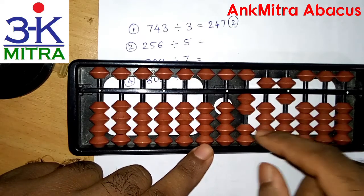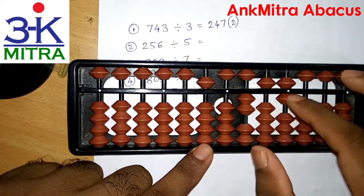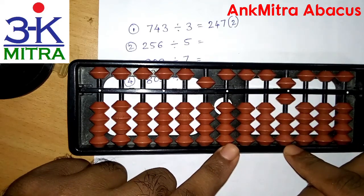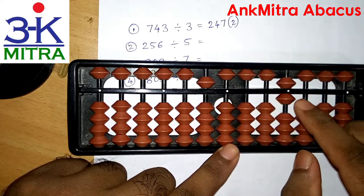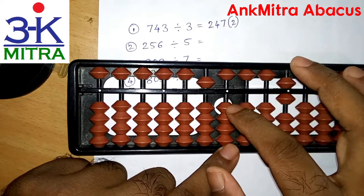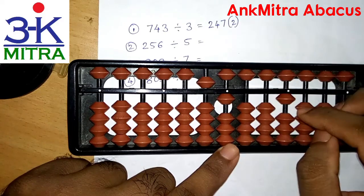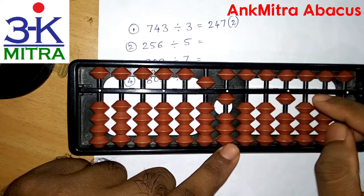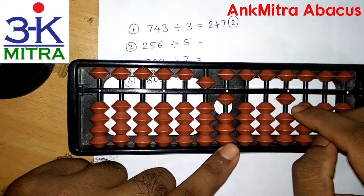Our answer will start on the second rod of the answer set. On the second rod — the exactly corresponding rod — I take 5. 5 times 5 being 25, I subtract 25 from this 25, leaving nothing. Moving to the final rod, we have the number 6. Reciting the table of 5, we have just 1 times 5 that can be subtracted. I take 1 on the corresponding units place rod of the answer set and subtract 5. The 1 remaining on the question set becomes the remainder. The answer for 256 divided by 5 is 51 with a remainder of 1.